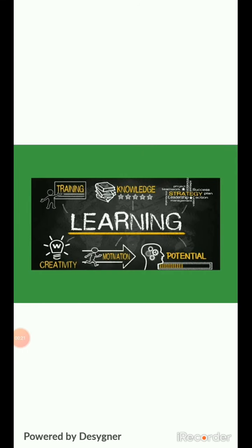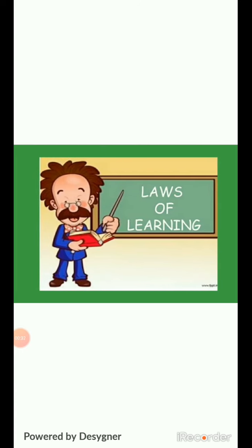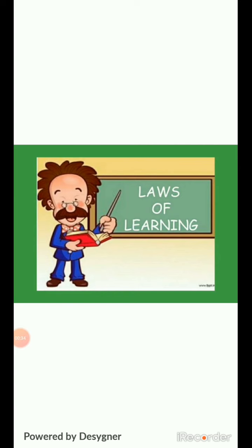In the last lecture we had completed the types of learning. Today we will start another aspect of this chapter, that is laws of learning. These laws were propounded by Thorndike on the basis of various experiments. We can bifurcate his laws into two parts: primary or major laws, and secondary or minor laws.